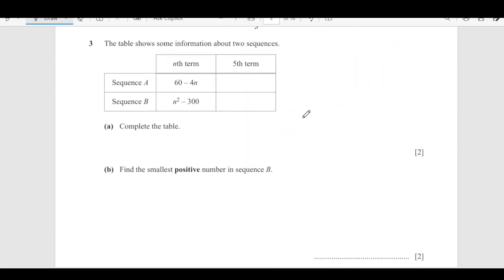Now, number 3, the table shows some information about two sequences. We have sequence A here and sequence B here. This is nth term and this is fifth term. Complete the table. So, we are going to find out the fifth term. This is that we are just replacing n by 5 here. 4 times 5, so this is 60 minus 20. That is 40. So, fifth term is 40. And this one is n squared, n is now 5 squared minus 300. 5 squared is 25 minus 300. This is going to be negative 275.